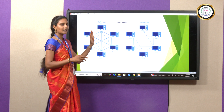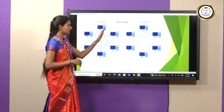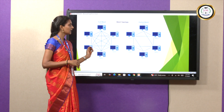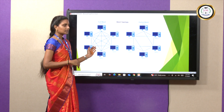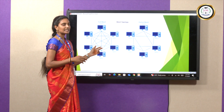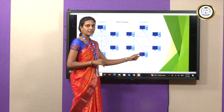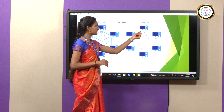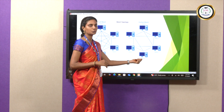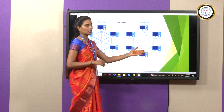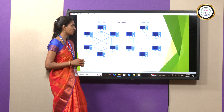In mesh topology, there are two types: full mesh topology and partial mesh topology. In full mesh topology, all the devices are connected to every other device, making data transfer very easy. In partial mesh topology, some devices are not connected to some other devices — for example, the first device is not connected to the base device. This is called partial mesh topology.